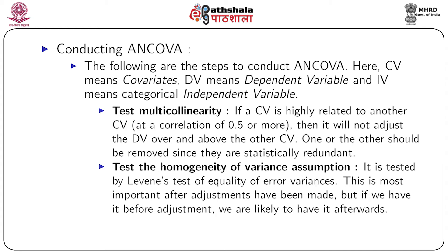If a covariate is highly related to another covariate at a correlation of 0.5 or more, it will not adjust the dependent variable over and above the other covariate. One or the other should be removed since they are statistically redundant. For example, regressing expenditure on both income and wealth — these two variables tend to be very highly correlated, leading to multicollinearity. One solution is to remove one of the highly correlated pair and fit the model using the other.